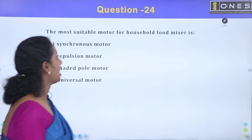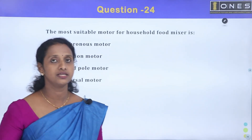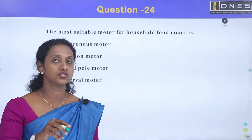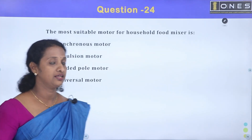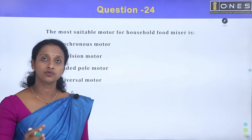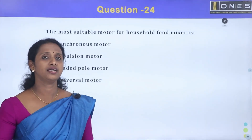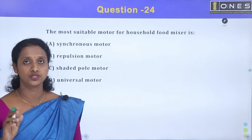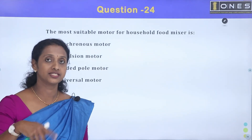Next: what is the most suitable motor for a household food mixer? The answer is a universal motor, which is a series motor. It can be used for both AC and DC supply. It has high starting torque and small size. These advantages — high starting torque, dual supply operation, and compact size — make the universal motor ideal for a food mixer.